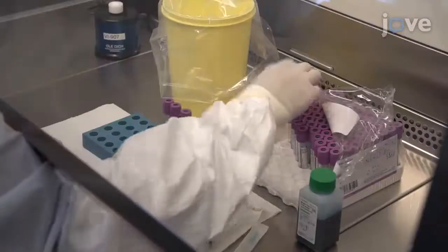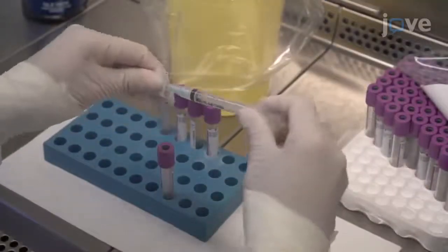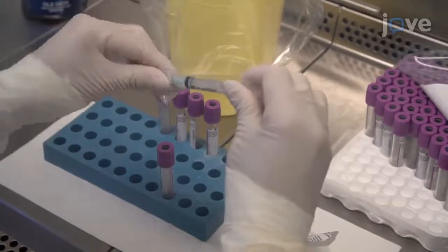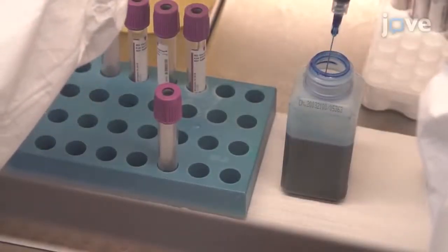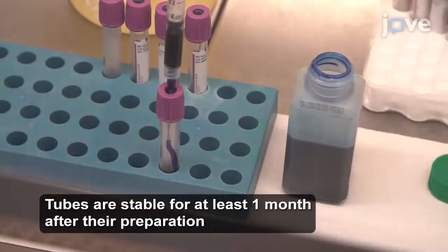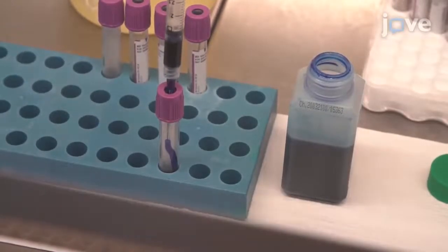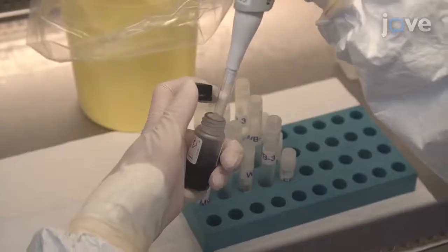Begin by preparing the blood collection tubes. Use a 25-gauge, 1-inch needle attached to a 3-milliliter syringe to inject 1.6 milliliters of a commercial lysis buffer into a 4-milliliter EDTA vacuum tube. It is critical to maintain the vacuum in the blood collection tube for blood collection. Hence, always use a needle to inject the lysis buffer into the blood collection tube.